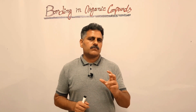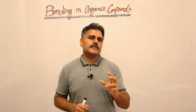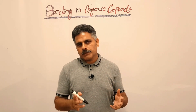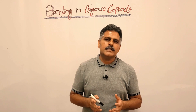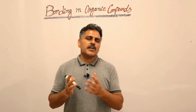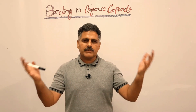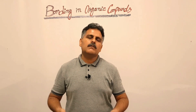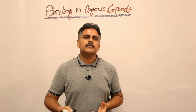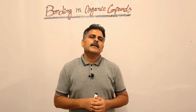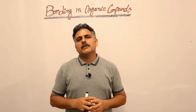Covalent bonds are formed by sharing of electrons. For carbon, it is very easy to share four of its electrons with four different atoms, or four carbon atoms, or four hydrogen atoms, and form covalent bonds.